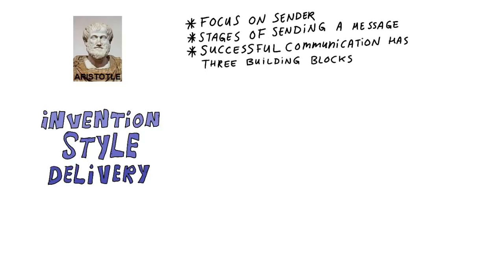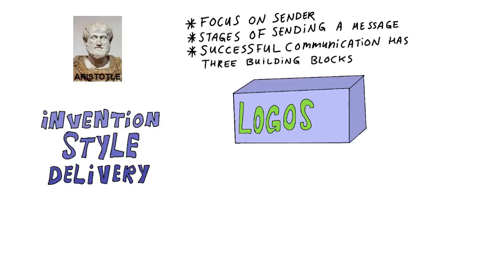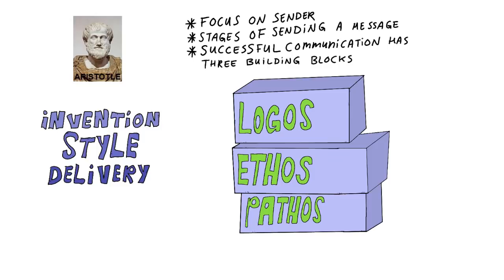Successful communication, which leads to persuasion, has three building blocks: logos, ethos, pathos. Logos is the use of reason, and basically it resembles what Socrates and Plato taught — rational arguments based on facts and logic. Our politician, for instance, might use some statistics to back up her argument.